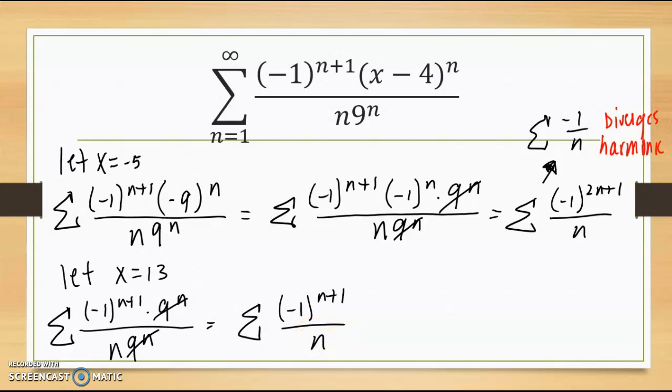When I look at this, that negative 1 to the n plus 1 makes it an alternating series. So our first condition, limit as n approaches infinity of the absolute value, that's 0.